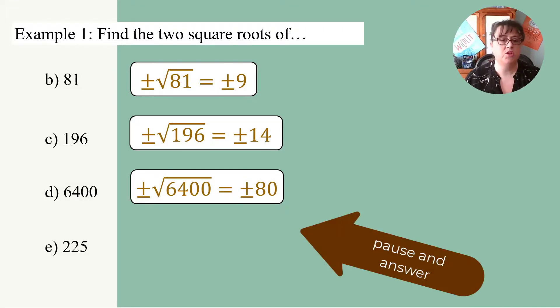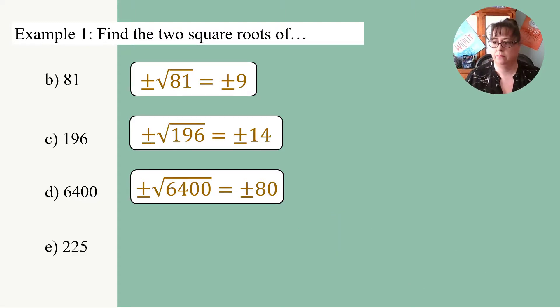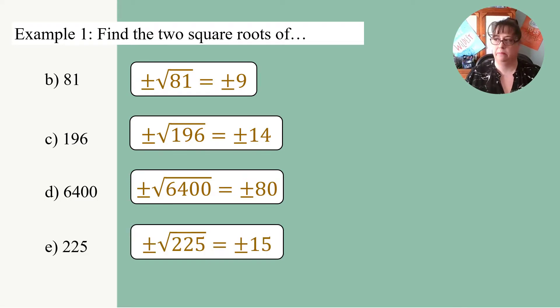What about 225? I'm going to pause — go back to your table of perfect squares and see what you get. You should have gotten plus or minus 15.